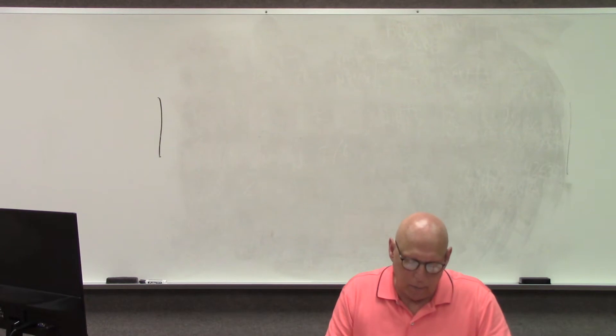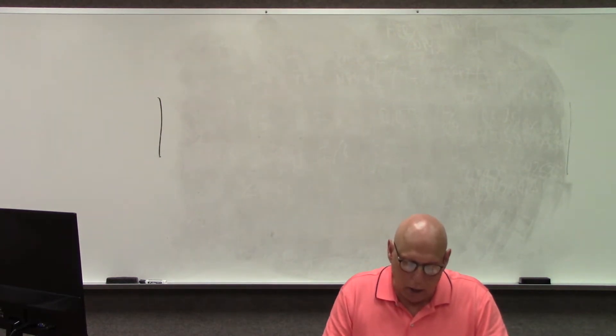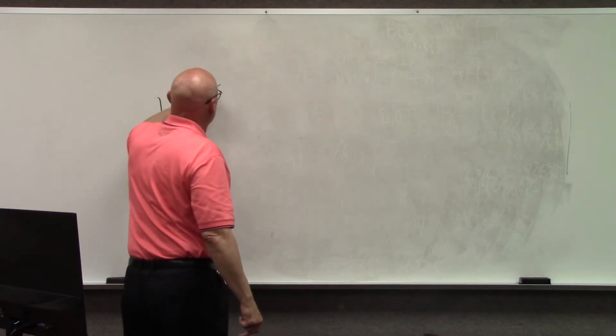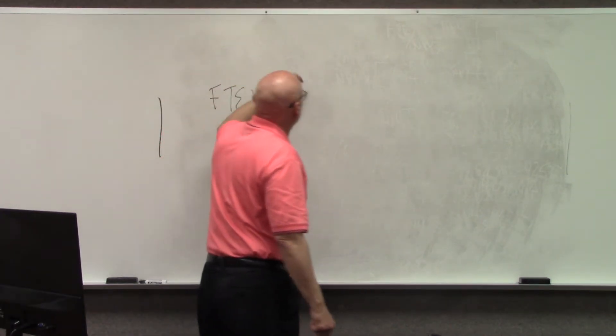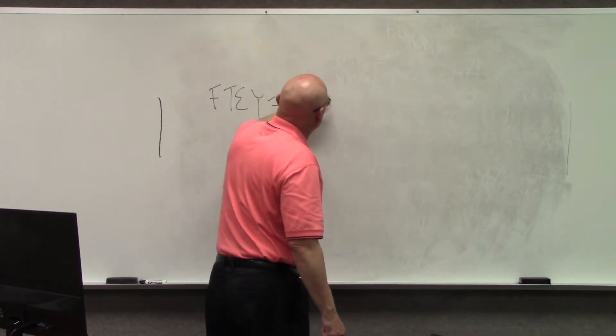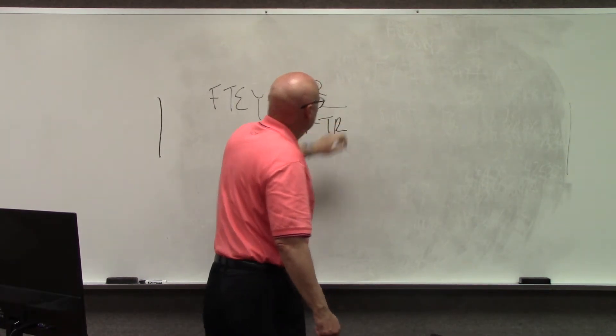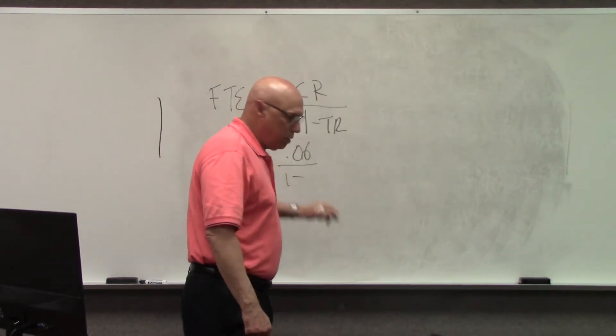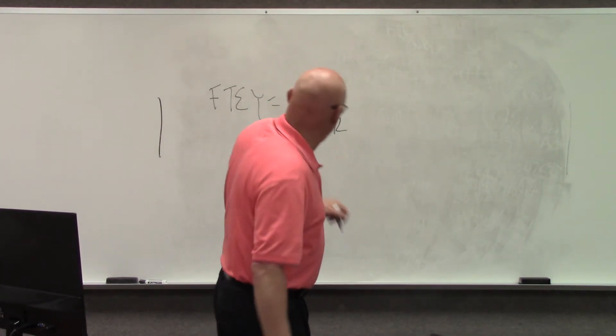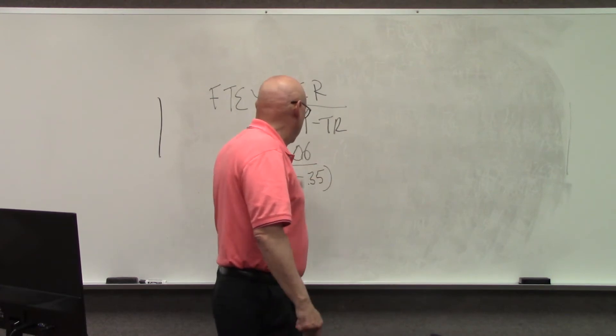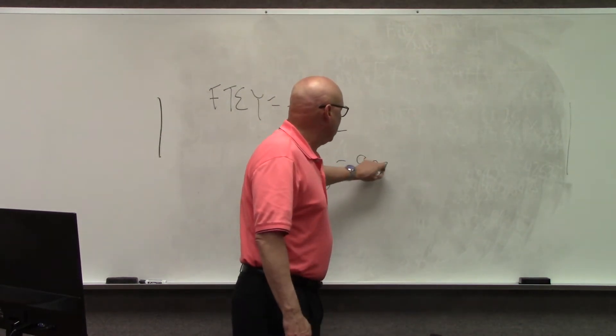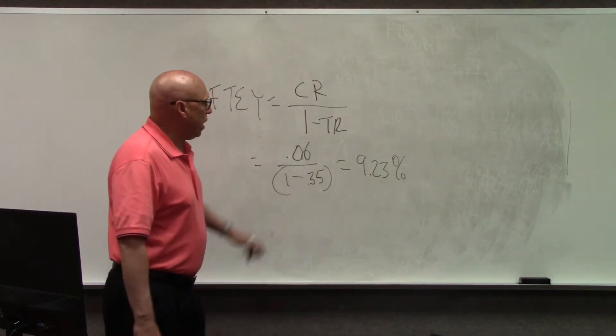An investor in the 35% marginal tax bracket. A municipal bond has a 6% coupon rate. What is the FTEY, the fully taxable equivalent yield for this bond? And the answer is, the FTEY is equal to the coupon rate divided by 1 minus the tax rate. And so, the coupon rate is 6%. And the tax rate is, we said, 35%. And so, we get an answer of 9.23%.